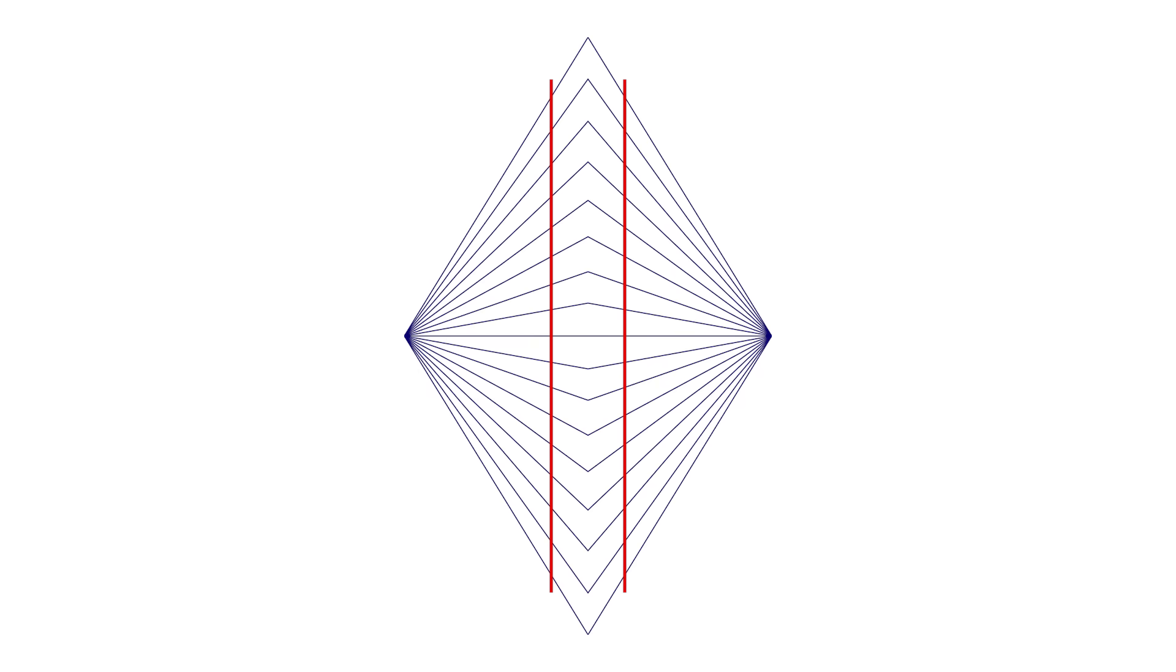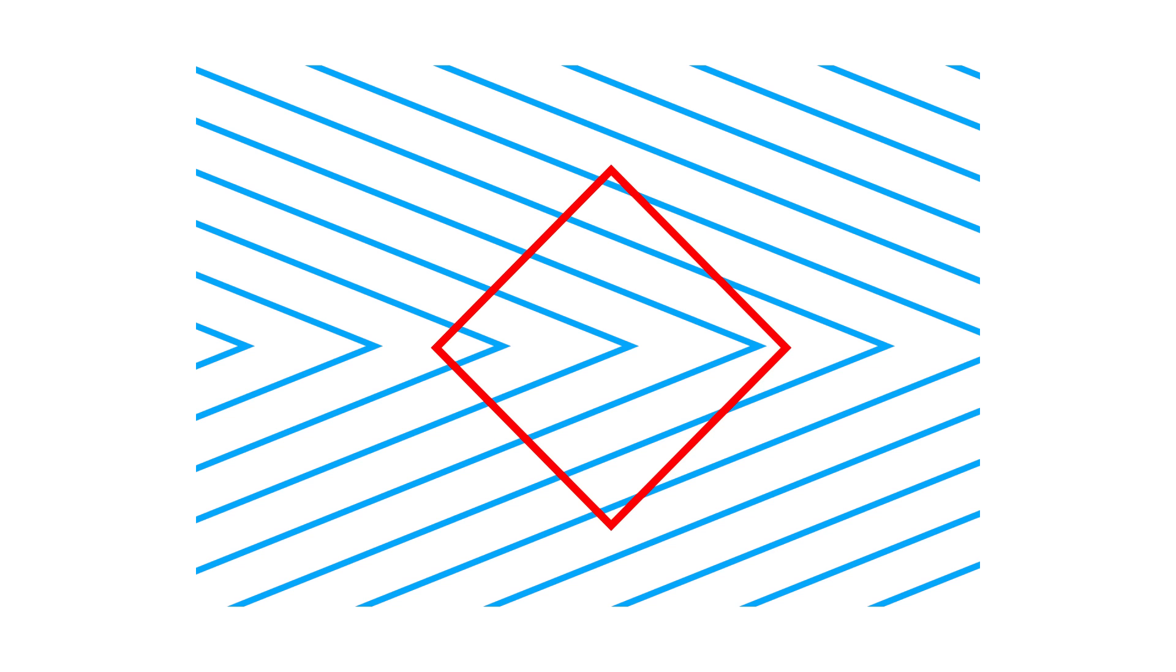Want Illusion. Are the two red lines straight or bowed inwards? They are actually straight, but they appear distorted because of the lines in the background. There are two other variations of this, like the Herring Illusion and the Orbison Illusion.